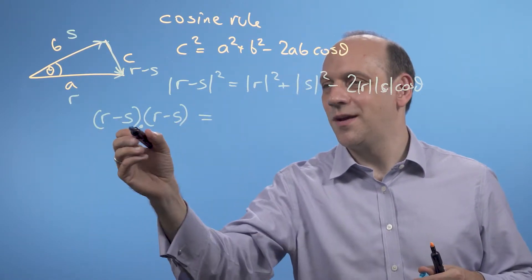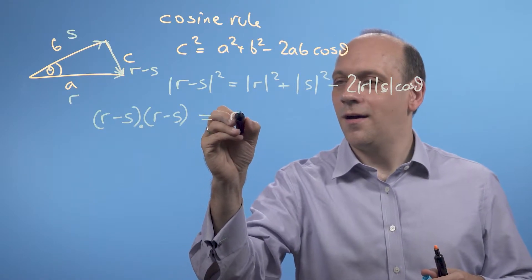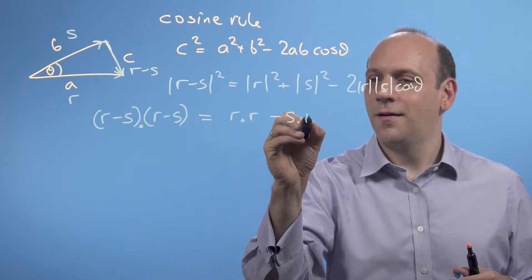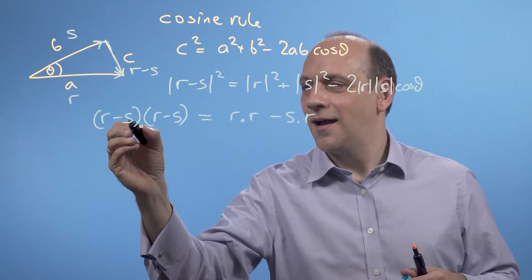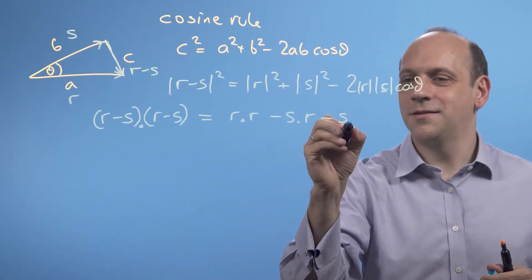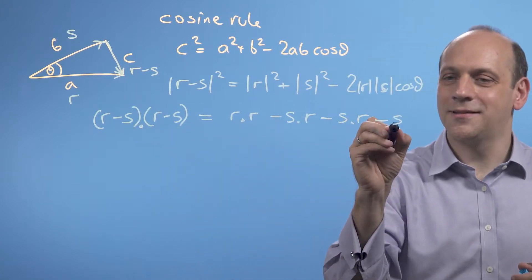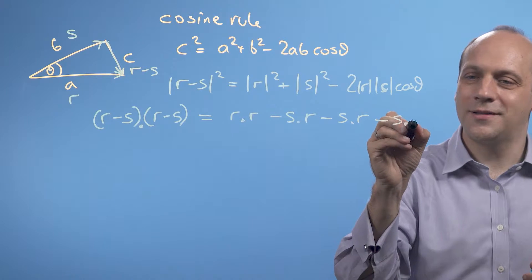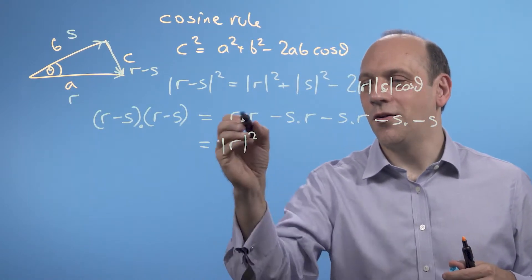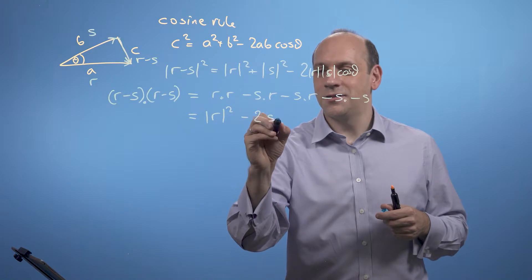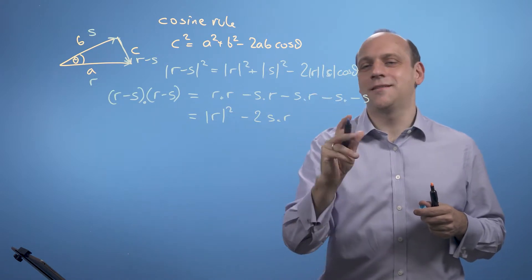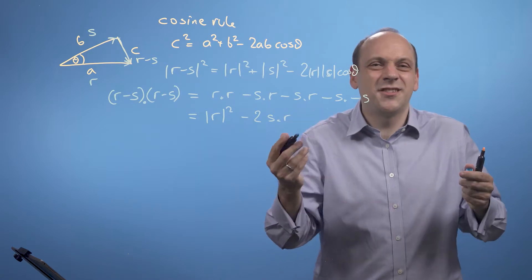That's going to be equal to r dotted with r, then minus s dotted with r, minus s dotted with r again, and then minus s dotted with minus s. So that is: we've got the modulus of r squared, minus twice s dotted with r, and then minus s dotted with minus s — which is going to be the size of minus s squared, which is just the size of s squared.